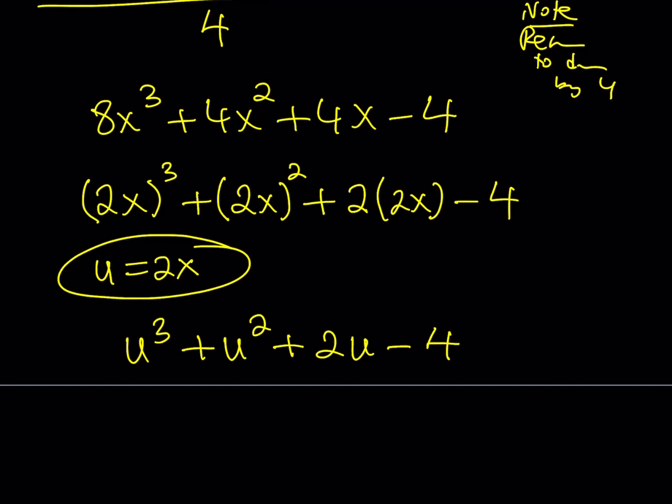What is so special about this monic polynomial? First of all, it's monic. The coefficient of u³ is 1, which is nice. And notice that the sum of the coefficients is 0. What is that supposed to mean? It means that u equals 1 is a solution of this polynomial equation. Because if you replace u with 1, you get 1 + 1 + 2 - 4 equals 0. Therefore, u - 1 is a factor.